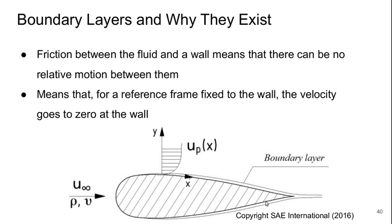It means that if we're in a reference frame moving with the wall, like moving with a vehicle, then the velocity goes to zero at the wall. This is typically called the no-slip condition. This causes a variation from some far away velocity gradually down to zero at the wall, and that is by definition the boundary layer.